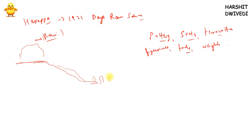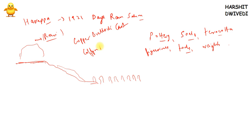One more important factor about Harappa: a copper bullock cart has been found there. There is also evidence of coffin burial in Harappa — they didn't bury their dead directly but placed the body in a coffin first and then buried it.